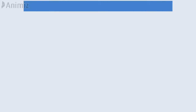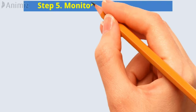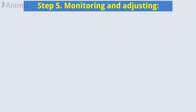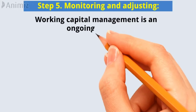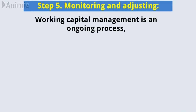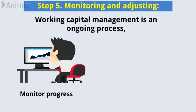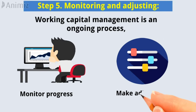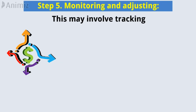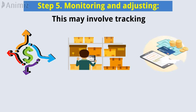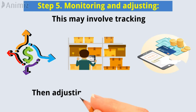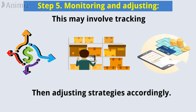Step 5: Monitoring and adjusting. Working capital management is an ongoing process, and it is important to monitor progress regularly and make adjustments as needed. This may involve tracking cash flows, inventory levels, and payment terms, and then adjusting strategies accordingly.